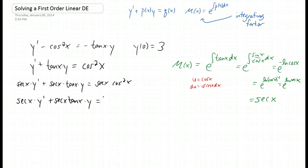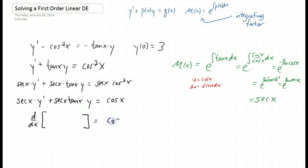I'm just popping things up on your screen pretty fast here — I don't want you to waste your time watching me write. So if you need more time, just hit pause. The secant cancels with one of the cosines to leave a cosine x on the right-hand side of the equation. And now we're at a point where the left-hand side of the equation is always going to turn into a derivative of two things: the dependent variable y, and the integrating factor, secant x.